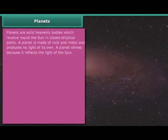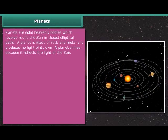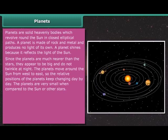Planets are solid heavenly bodies which revolve around the Sun in closed elliptical paths. A planet is made of rock and metal and produces no light of its own. A planet shines because it reflects the light of the Sun. Since the planets are much nearer than the stars, they appear to be big and do not twinkle at night.